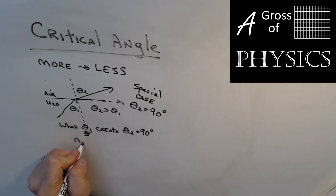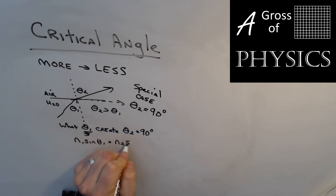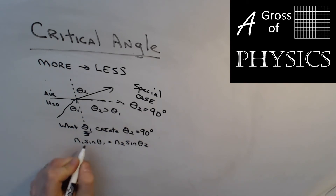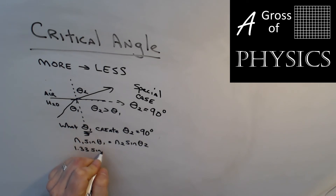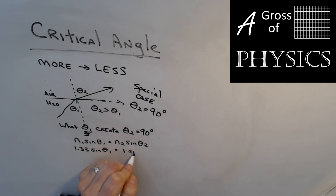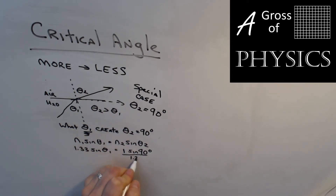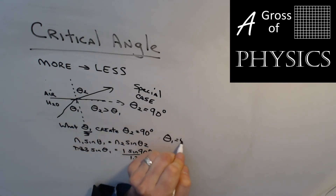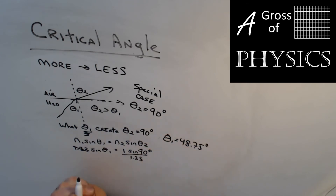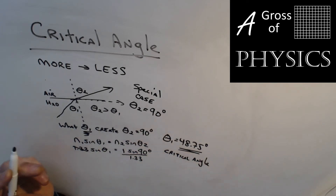Using Snell's law, we figure out what incident angle produces θ2 = 90 degrees — that's the critical angle. So: N1 sinθ1 = N2 sinθ2. N1 is water = 1.33, sinθ1 is unknown, N2 is air = 1, sinθ2 = sin90 = 1. So sinθ1 = 1/1.33, giving θ1 = 48.75 degrees — the critical angle for water is about 49 degrees.